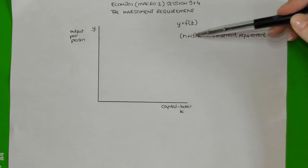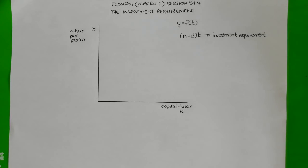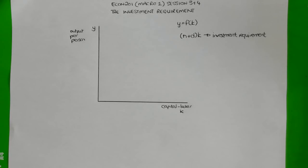Together, those two things determine the investment requirements. At a very minimum, any economy needs a certain amount of investment annually in order to just keep the amount of capital stock per person constant. Why? Because every year the population is growing, so we need to account for more and more people entering the labor market who require machinery to work with. If we don't increase investment, those people won't have sufficient capital stock, and the capital-to-labor ratio will fall. Similarly, with respect to depreciation, if we don't replace old, worn-out, or obsolete machinery, the capital-to-labor ratio will decline.